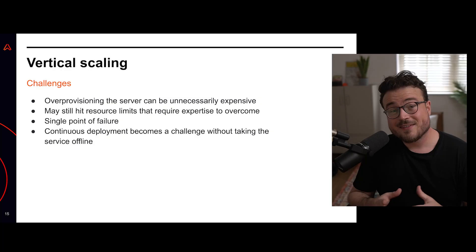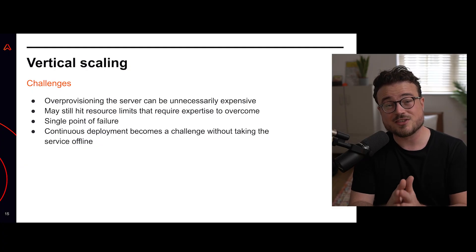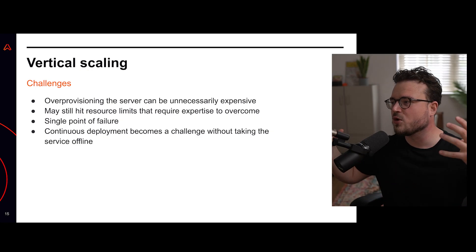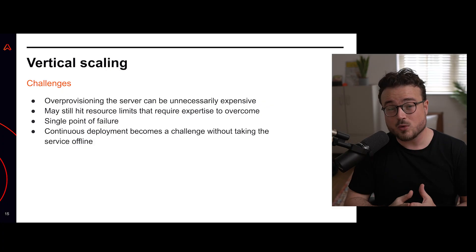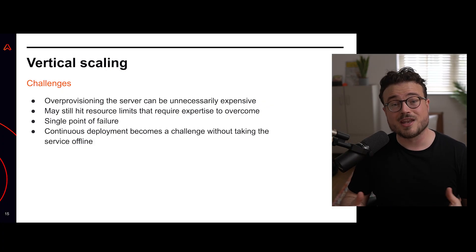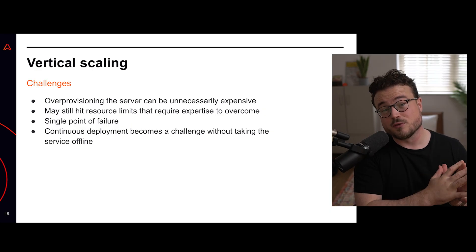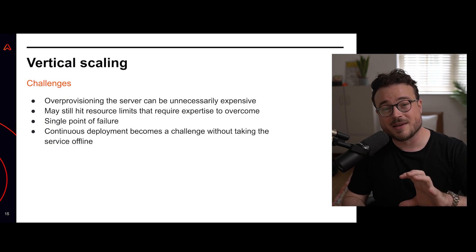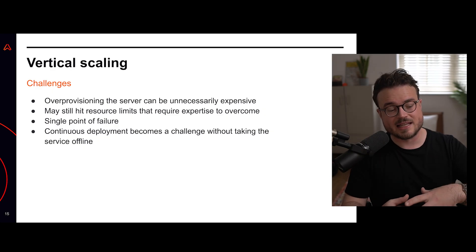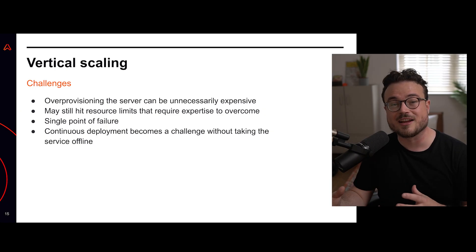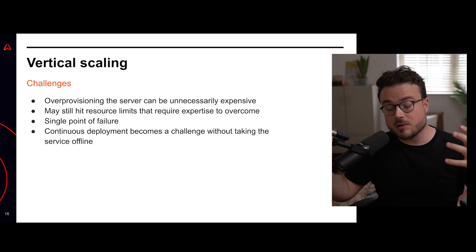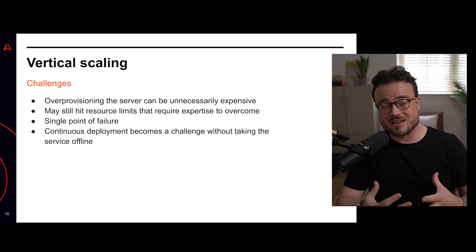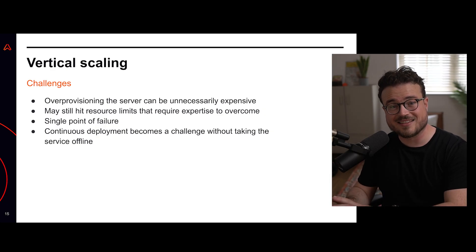Even if that number was really high, there are some practical considerations around vertical scaling you should be aware of. First, vertical scaling can be expensive because you need to provision your server with enough resources to handle your maximum number of concurrent connections, even though in reality you won't be operating at that capacity most of the time — for example, at night while most of your users are offline. Secondly, even with a very powerful server, you're probably going to run into a resource limit somewhere — one that requires expertise to overcome. For example, you might hit the limit of available threads or ephemeral ports before you have to start tinkering with kernel parameters.